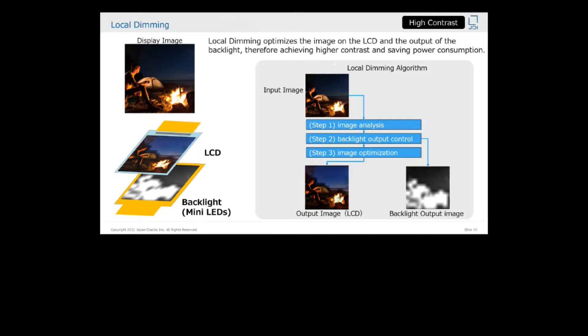The right chart shows the outline of local dimming and the system algorithm. Basically, step one is the image analysis. And based on the step one results, the backlight output is controlled, which leads to the final optimized image. For this approach, as a result, local dimming backlight LCDs can achieve contrast ratios above 100,000 to 1, while also saving power consumption.